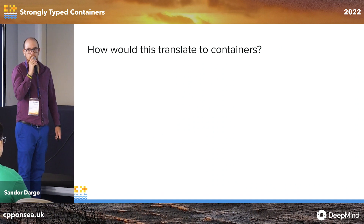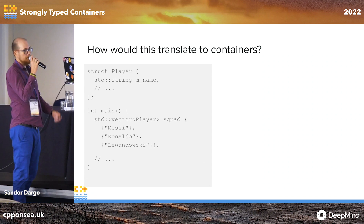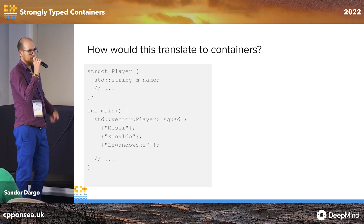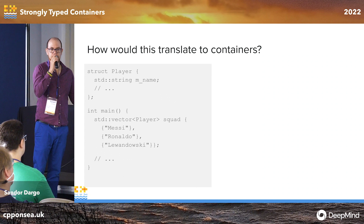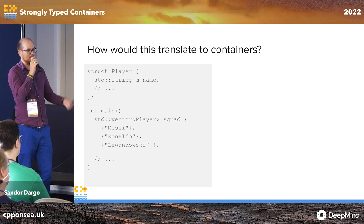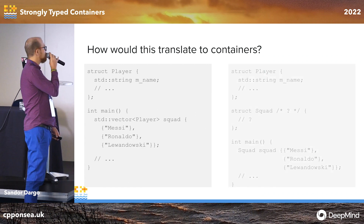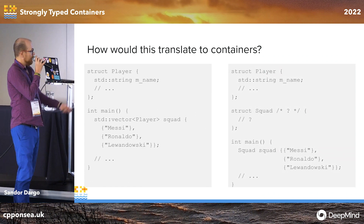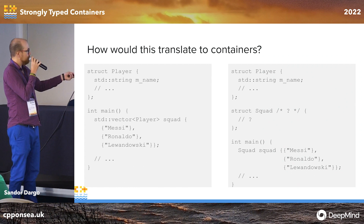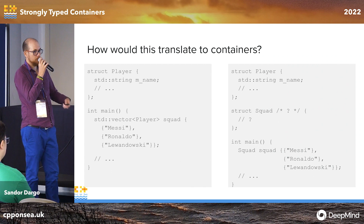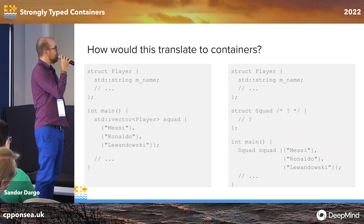How would we translate this to containers? Let's say we have a simple struct for a Player that only has a name. There we have a vector of players. On the right side, we see that we have a Squad, but we don't know yet how to implement it. Instead of a vector of players, we want to use that Squad and pass players in the same way, or as close as possible.